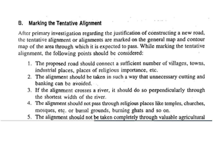The next step is marking the tentative alignment. After primary investigation, the tentative alignment is marked on the general map of the area. The following points should be considered: the proposed road should connect a sufficient number of villages, towns, industrial places, places of religious importance, etc.; the alignment should avoid unnecessary cutting and banking; if the alignment crosses a river, it should pass perpendicularly through the shortest width; the alignment should not pass through religious places like temples, churches, mosques, burial grounds, etc.; and the alignment should not be taken through valuable agricultural areas.